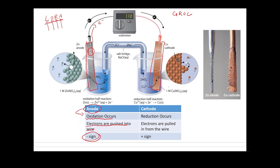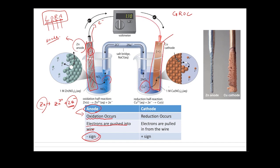In our zinc and copper example, zinc becomes Zn²⁺ by giving out two electrons — it loses electrons, so zinc is our LoRa species and the zinc plate is the anode. On the other hand, Cu²⁺ gains electrons and deposits on the copper plate. Copper gains electrons, undergoes reduction, acts as an oxidant, and this always happens at the cathode. So this end is the cathode.